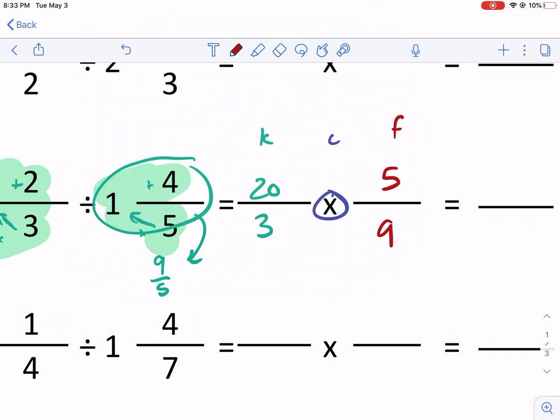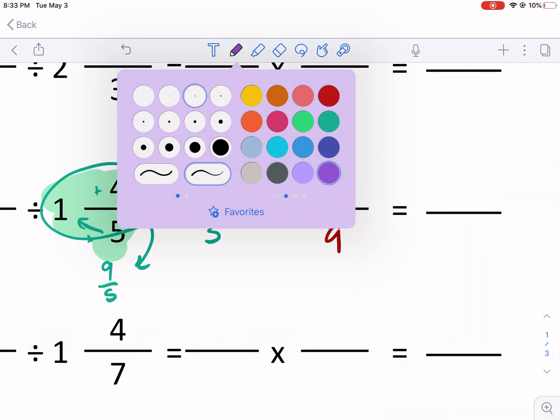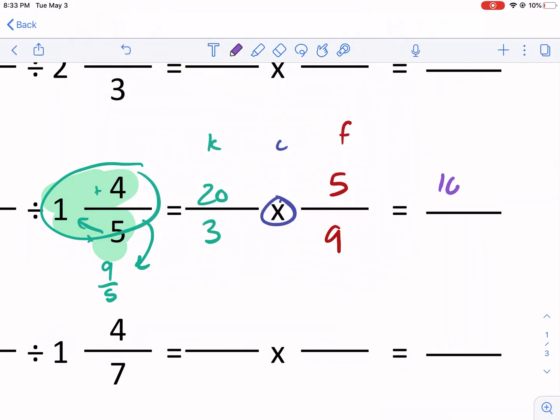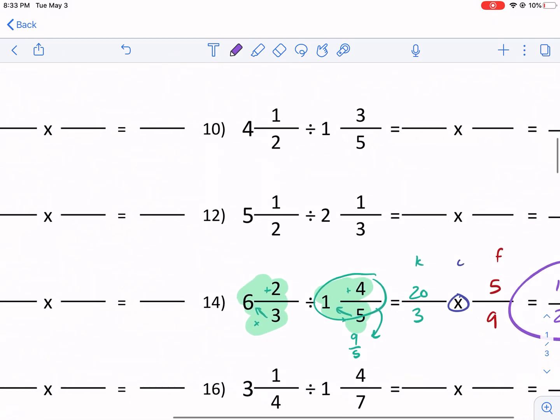So I just want to be careful when you do that. I don't want you guys to make a mistake. Now we have 20 times five in the top. That is 100. And then we have not three times nine in the bottom. That is 27. And that is our final answer. Wish I would've used purple earlier. Great look, but that's all there is to it.